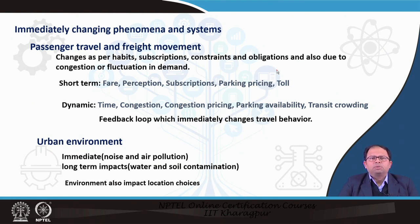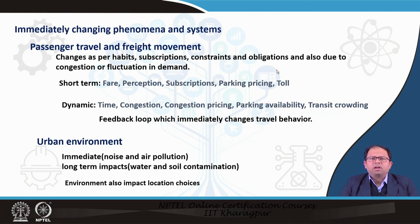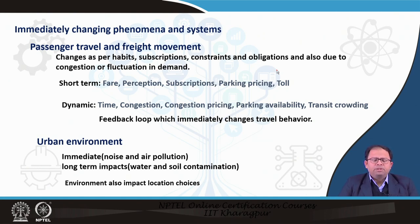Finally, when we consider the urban environment, there are certain effects that are immediate — like noise and air pollution — where an urban corridor with a lot of traffic will lead to more noise and more air pollution. There are also certain long-term impacts like water and soil contamination, which happen from different kinds of land use choices the city has. These changes need to be modeled in the land use transportation system, and as a feedback, the environment also impacts location choices — if an area's environment is not good, people will not choose to locate there for jobs or residences.